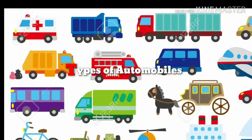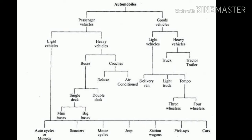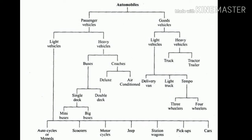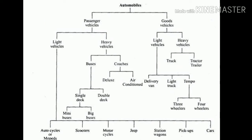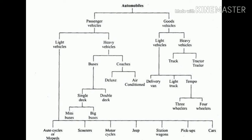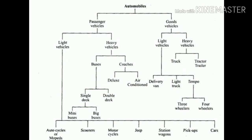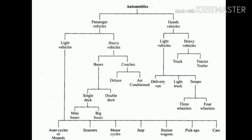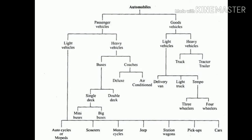First, we will discuss different types of automobiles. Automobiles are generally divided into two different parts. First is Passenger Vehicle, and second is Goods Vehicle. Passenger Vehicles are again divided into two types: Light Vehicles and Heavy Vehicles. Light Vehicles include Autocycles or Mopeds, Scooters, Motorcycles, Jeep, Station Wagons, Pickups, and Car. Heavy Vehicles are divided into Buses and Coaches.